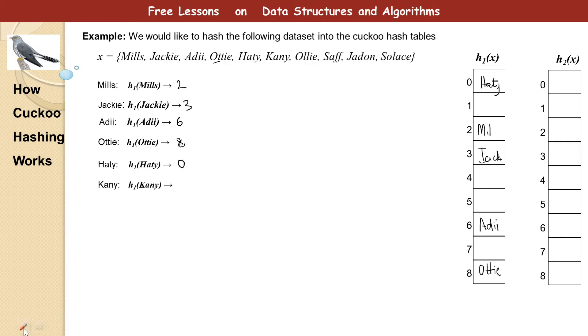Let's take h1 of Kanny. Let's see what it gives us. It gives us three. Oh. In three we already have Jackie. So what do we do? Now you may think that we just go and do h2 of Kanny. But that is not what we are going to do. We are going to throw out what is here and put Kanny in there. So throw out what is there. And then calculate h2 of Jackie. Because you need to calculate h2 of what was already there before. And we are fortunate it gives us one. So we place it in there. Permit me to just draw a line from here to here.